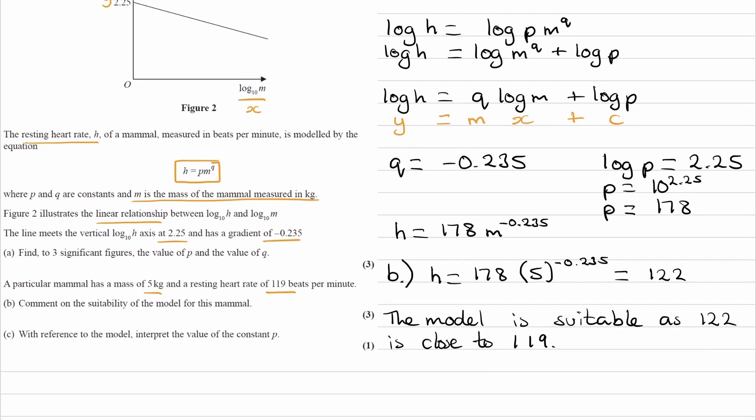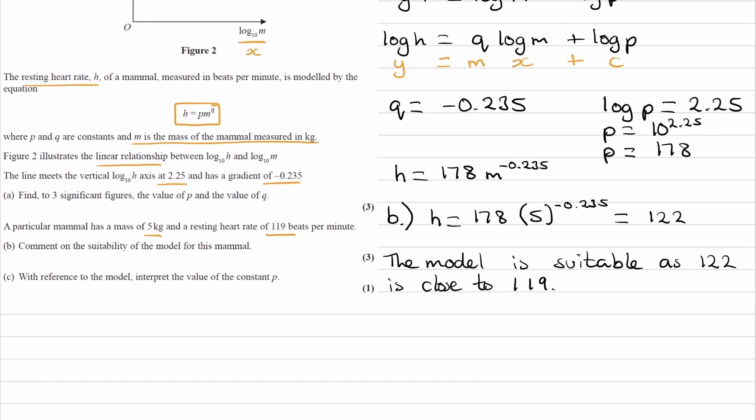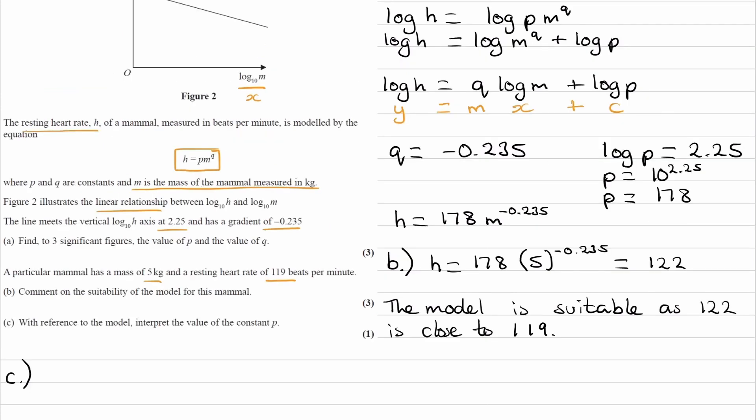And then for part c, so with reference to the model, interpret the value of the constant p. So we have our equation. h is equal to p m to the power of q. So think about how can we get h being equal to p? And that will help you to interpret the constant p.